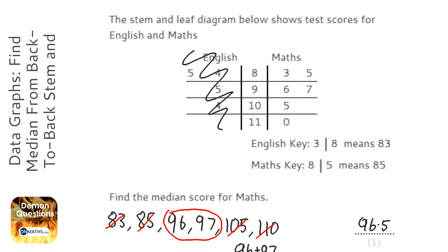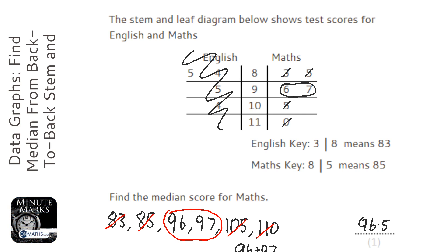There is also a way of doing this without writing them down. Cross out the top left value — this one — and then the bottom right value, and you're left with two in the middle. Just be careful not to write the answer as 6.5, because obviously 96.5 is the answer.